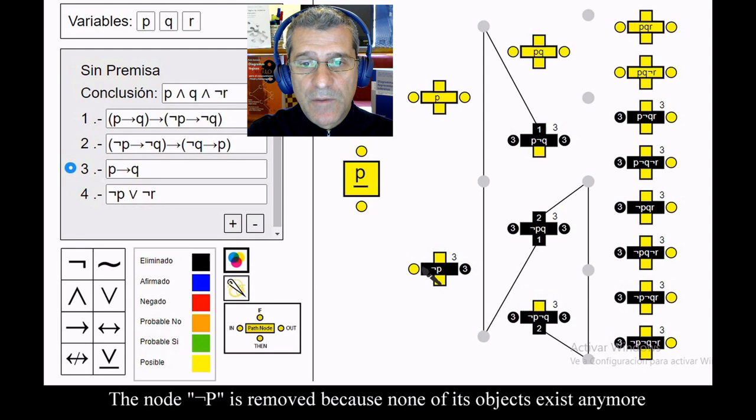Premise number 4 removes all nodes that still contain the p, r combination.